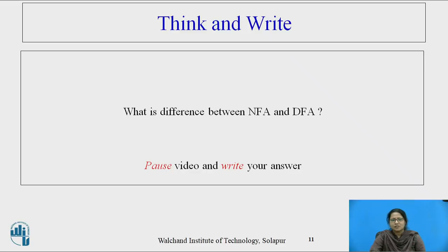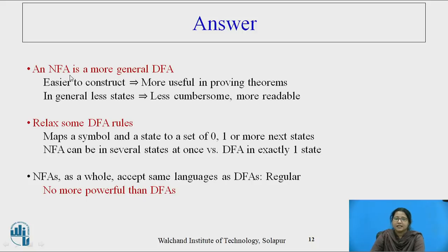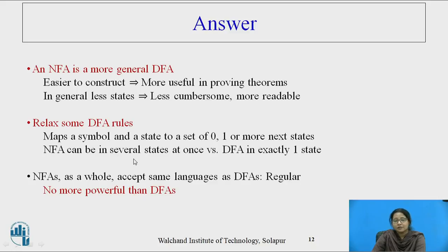All students, please pause the video and try to find the difference between NFA and DFA. An NFA is more general as compared to DFA — it is easier to construct and more useful in proving theorems. In general, it has fewer states, so it is less cumbersome and more readable. We can relax some rules compared to DFA. It maps a symbol and a state to a set of 0, 1, or more next states. NFA can be in several states at once versus DFA, which is in exactly one state. However, NFA accepts the same language as DFAs — that is, regular language — so it is no more powerful than DFA.